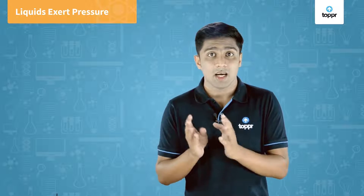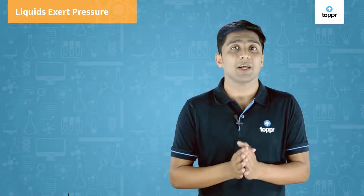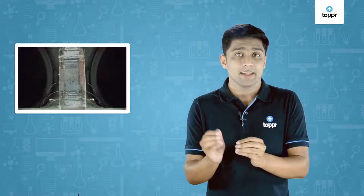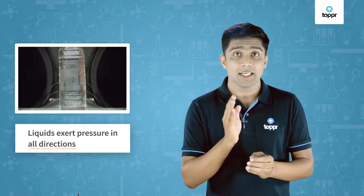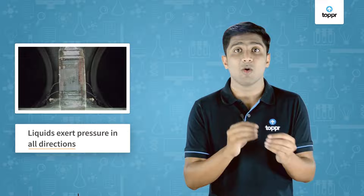Now let's see how liquid exerts pressure by doing a small activity. Take a bottle of water and pierce some holes into it. You can see the water is coming out — but why? Because the liquid, that is the water in the bottle, exerts pressure in all directions. That is why when you pierce some holes into the bottle, the water comes out.